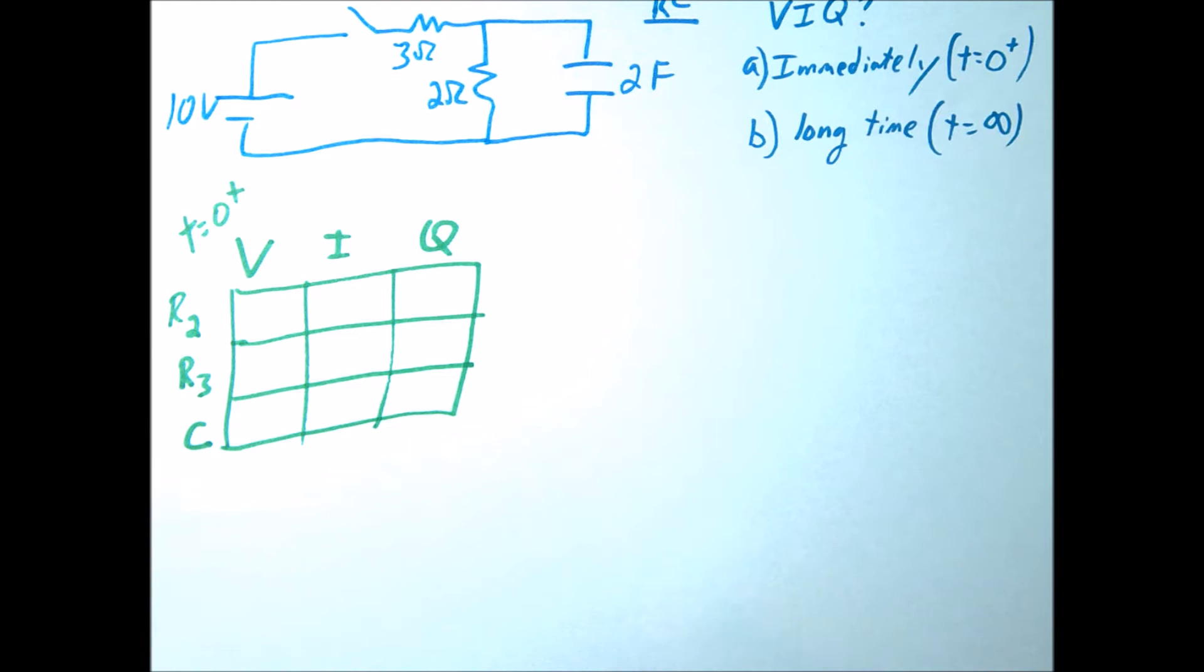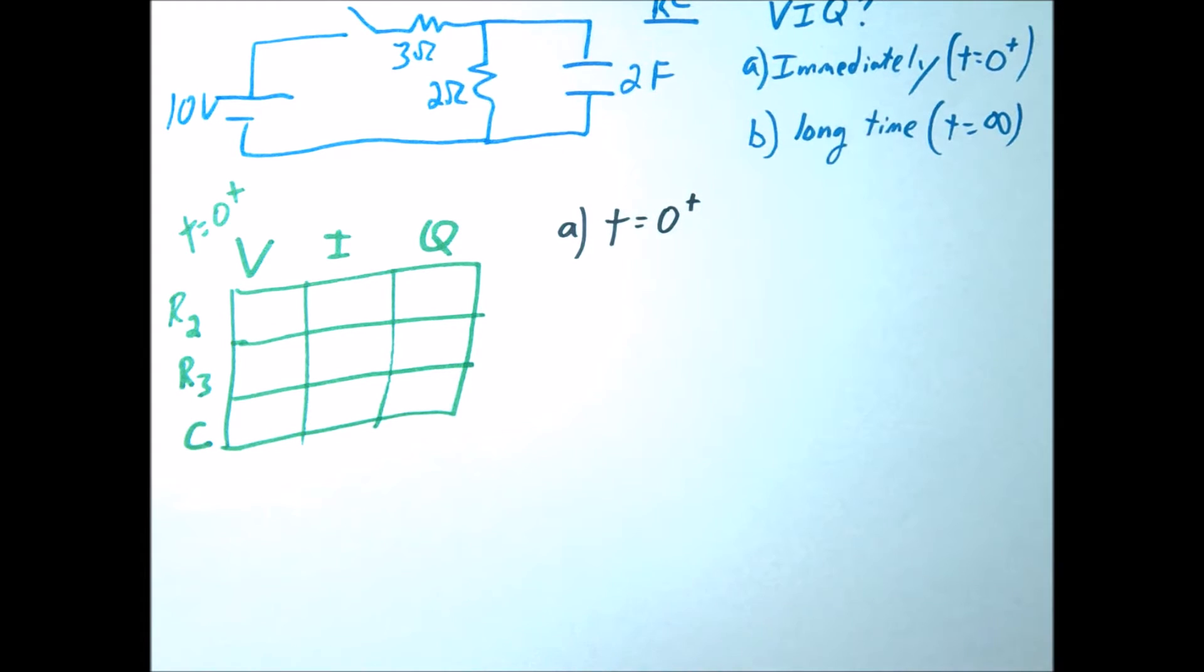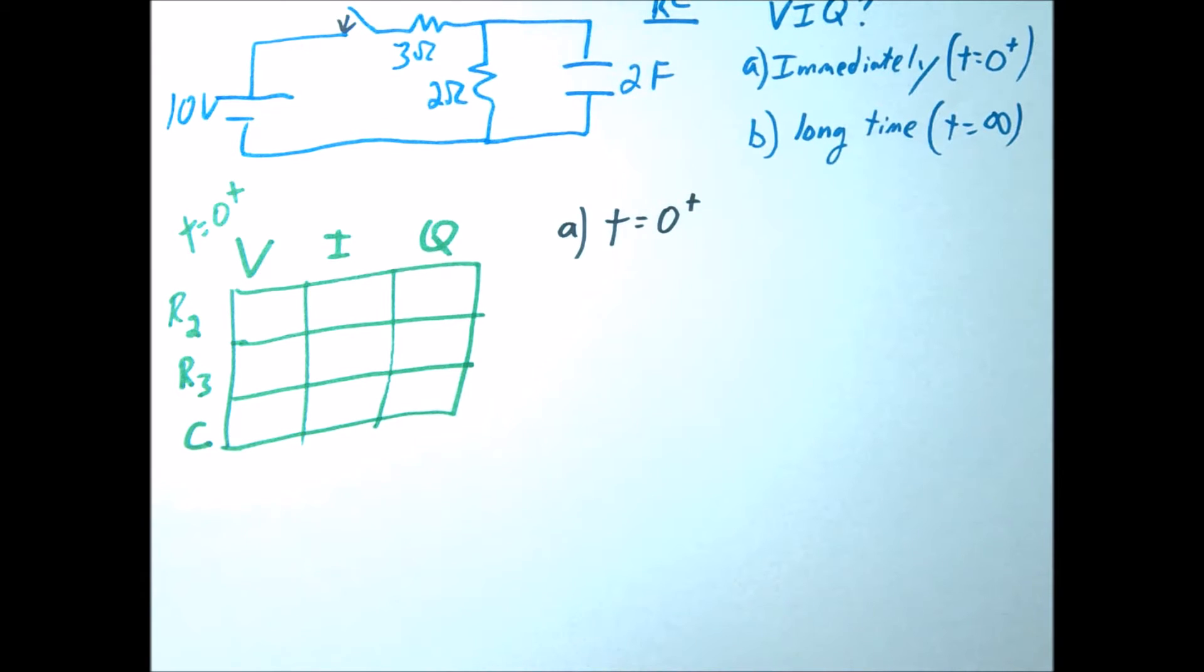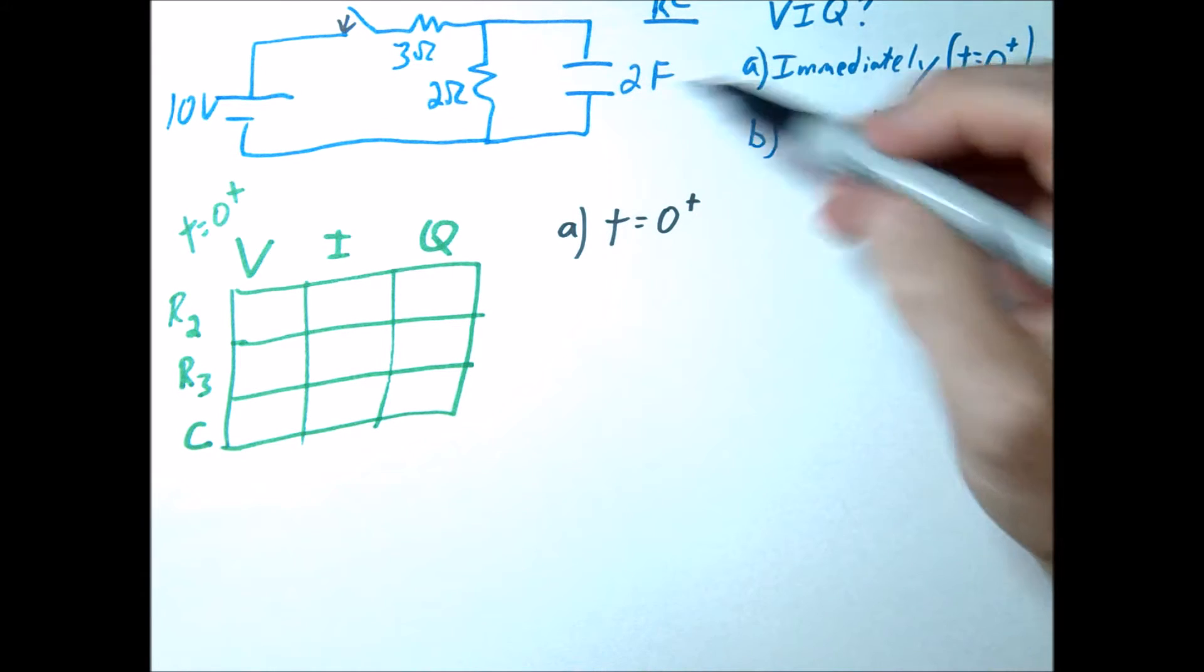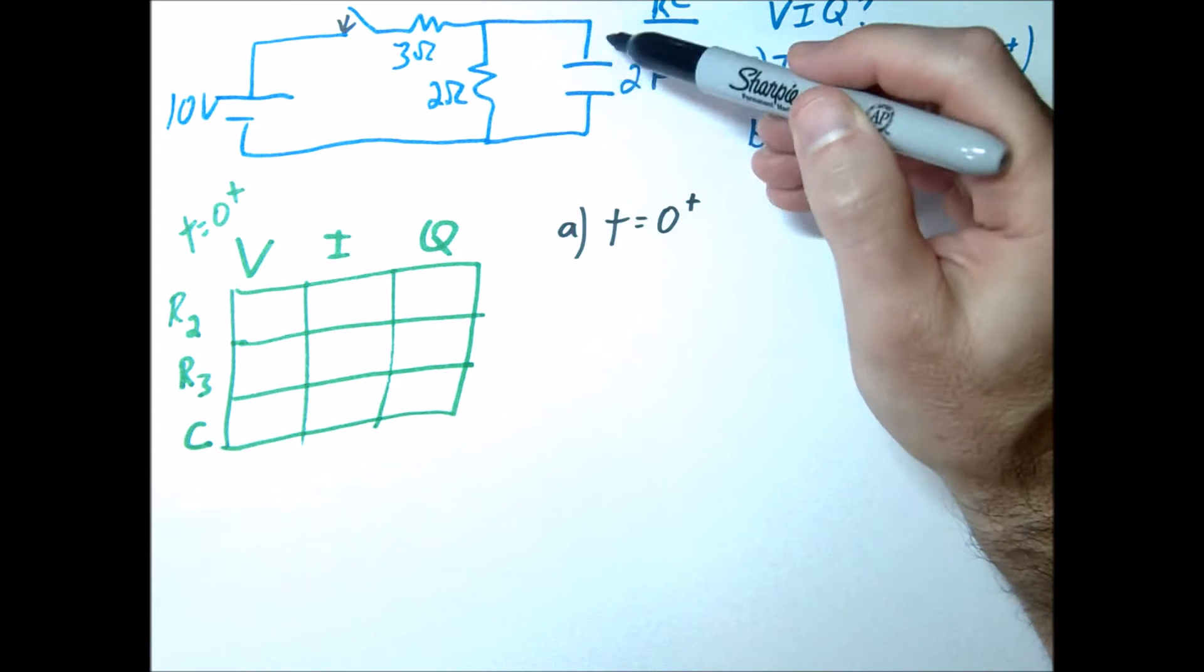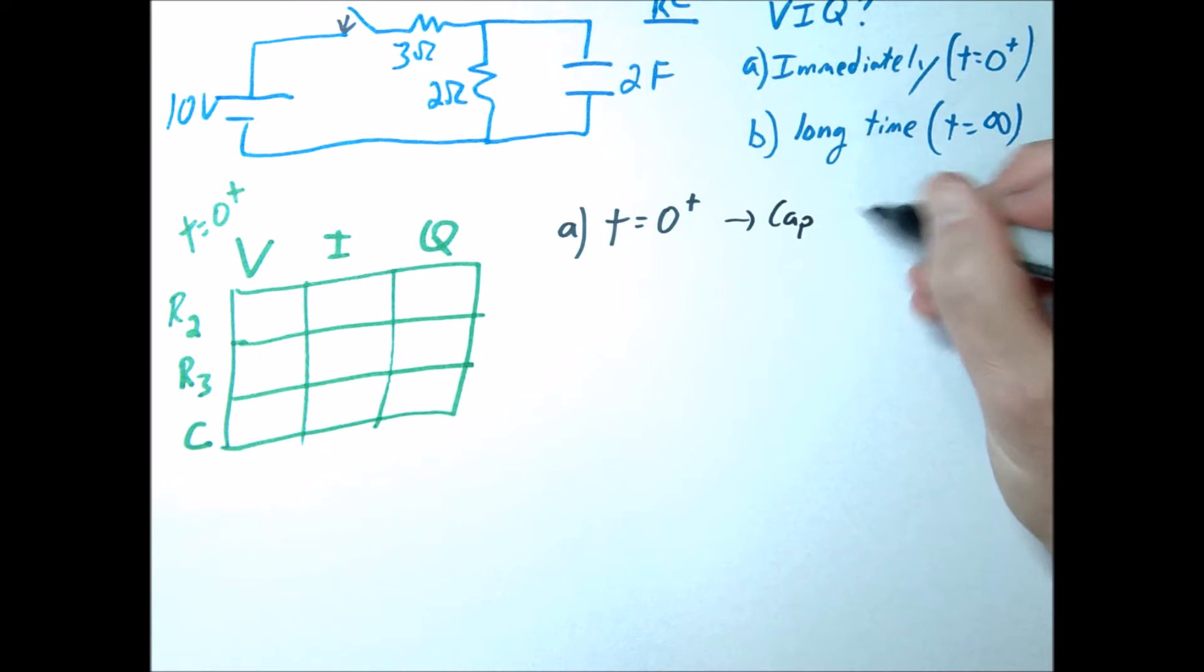So let's do it immediately first. This would be at our T equals 0 plus, so right after we close our switch here. As said before, when you immediately close a switch, essentially the capacitor, so the key idea is the capacitor is going to act like a short.